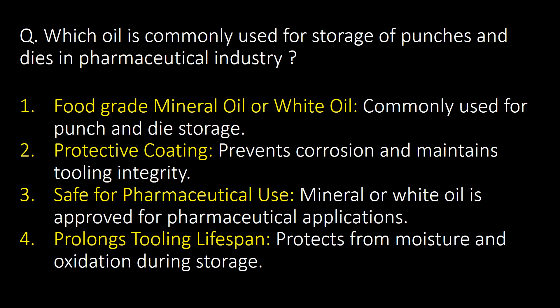Which oil is commonly used for storage of punches and dies in the pharmaceutical industry? Food grade mineral oil or white oil is commonly used for punch and die storage. It gives a protective coating, prevents corrosion, and maintains tooling integrity.